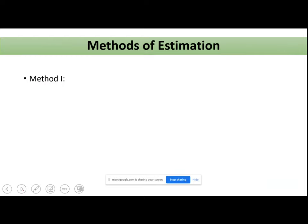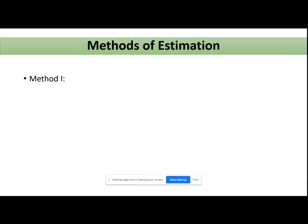Next is how you estimate the HLB of your surfactant. We have different methods. The first method: every surfactant has a chemical formula, and each group in that formula has been assigned a number. You calculate HLB using this formula: HLB = summation of hydrophilic group numbers...